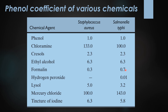For example, formalin has a phenol coefficient of 0.3 for Staphylococcus aureus and 0.7 for Salmonella typhi, making it less effective than phenol. A coefficient greater than one indicates greater effectiveness. Lysol has a coefficient of 5 against Staphylococcus aureus and 3.2 against Salmonella typhi. Ethanol has a value of 6.3 against both organisms. Chloramine has a phenol coefficient of 133 against Staphylococcus aureus and 100 against Salmonella typhi.